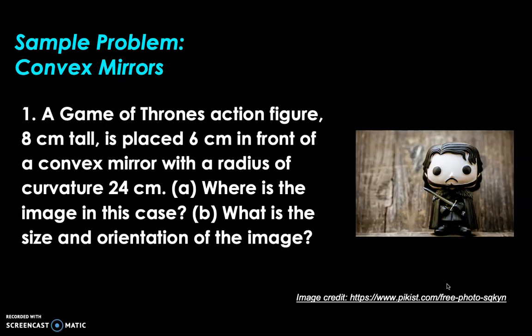A Game of Thrones action figure, 8 centimeters tall, is placed 6 centimeters in front of a convex mirror with a radius of curvature of 24 centimeters. Where is the image in this case? And for part B, what is the size and orientation of the image?